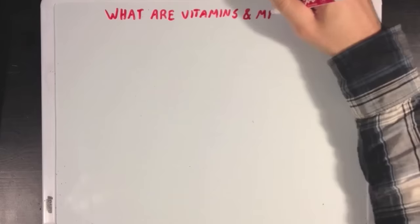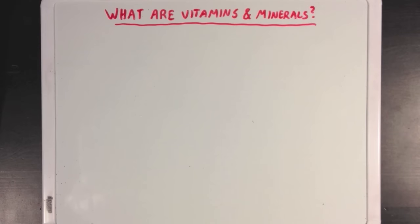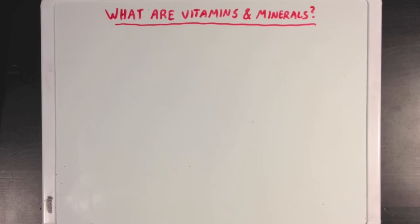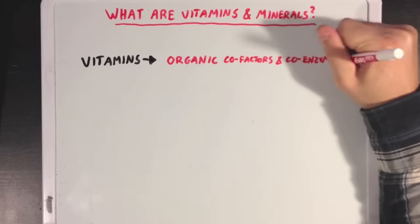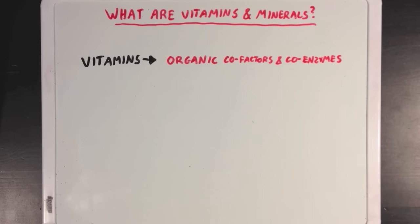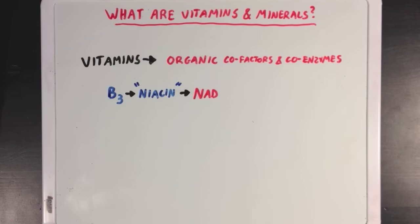Now interestingly, what people normally call vitamins and minerals, like the kinds that a doctor would tell you to make sure you get enough of in your diet, are often different cofactors and coenzymes. And what's special about vitamins and minerals is that your body can't build them up from scratch, and you need to get them from your diet in order to stay healthy. So when we say vitamins, we typically refer to organic cofactors and coenzymes. Two great examples are ones we just discussed: Vitamin B3, which you may see being called niacin on a food label, is actually just a precursor for NAD, and vitamin B5 is just a precursor for coenzyme A.